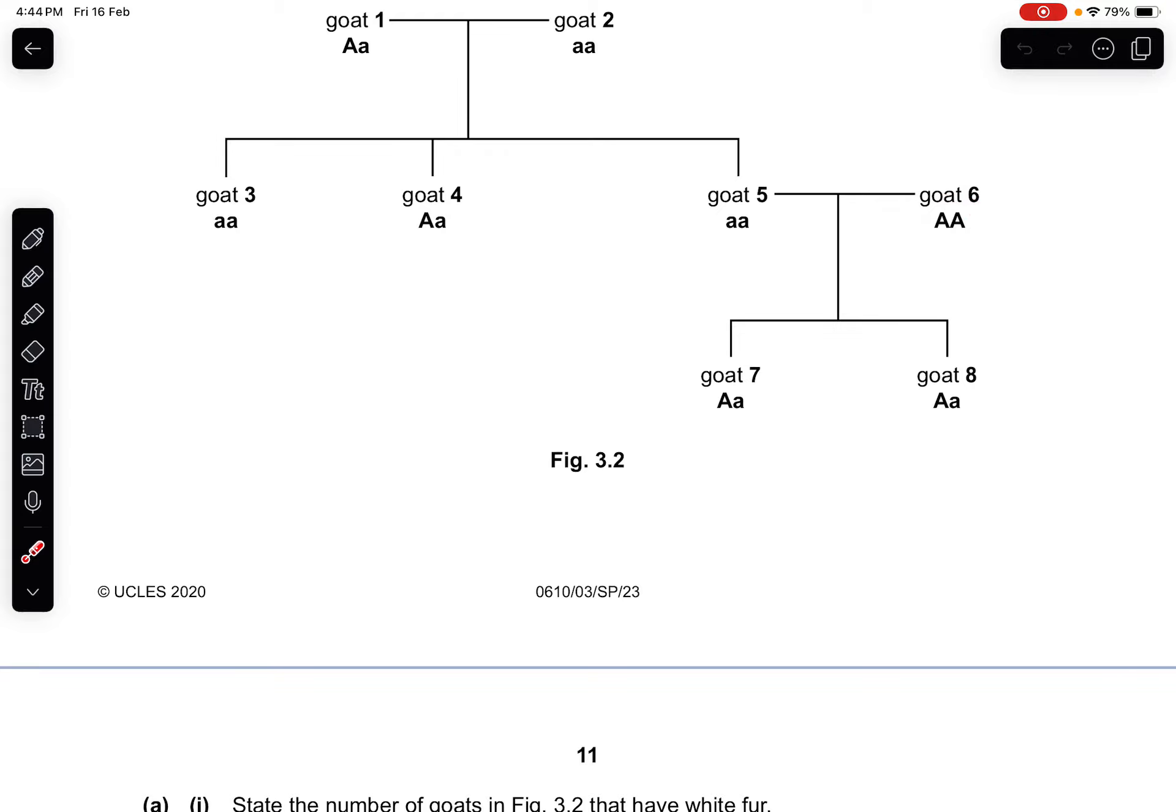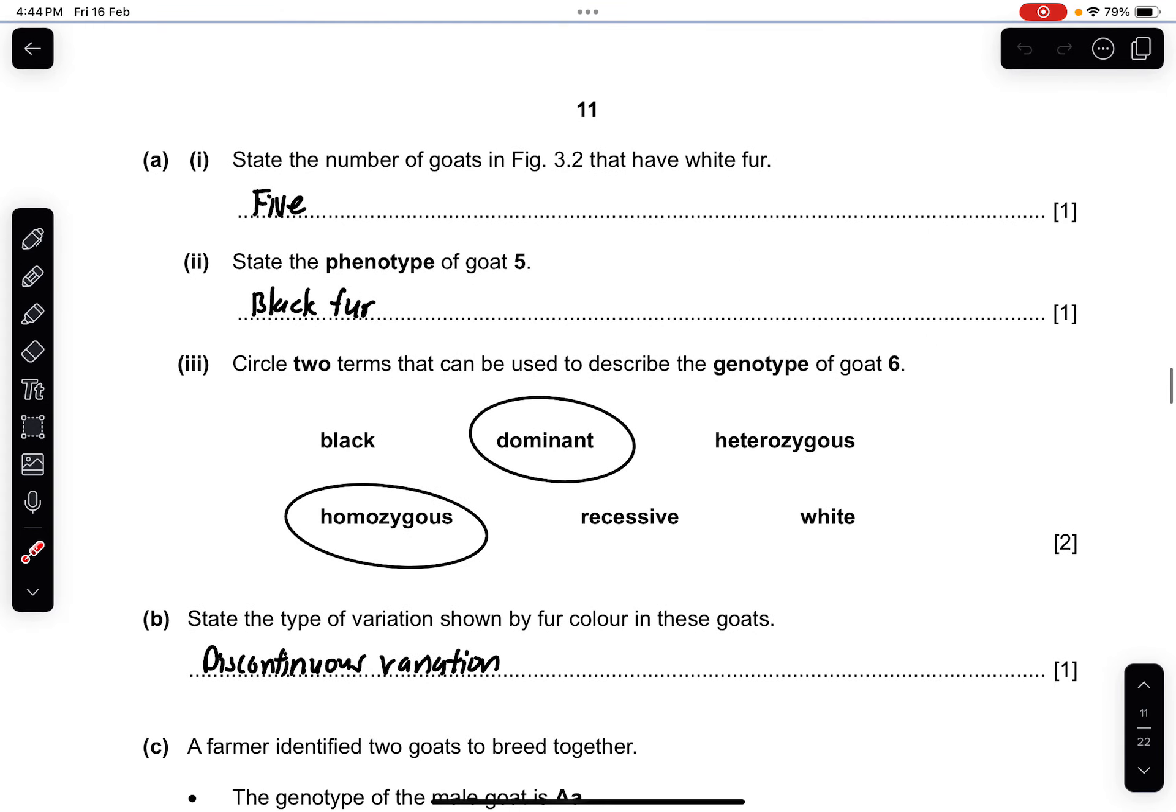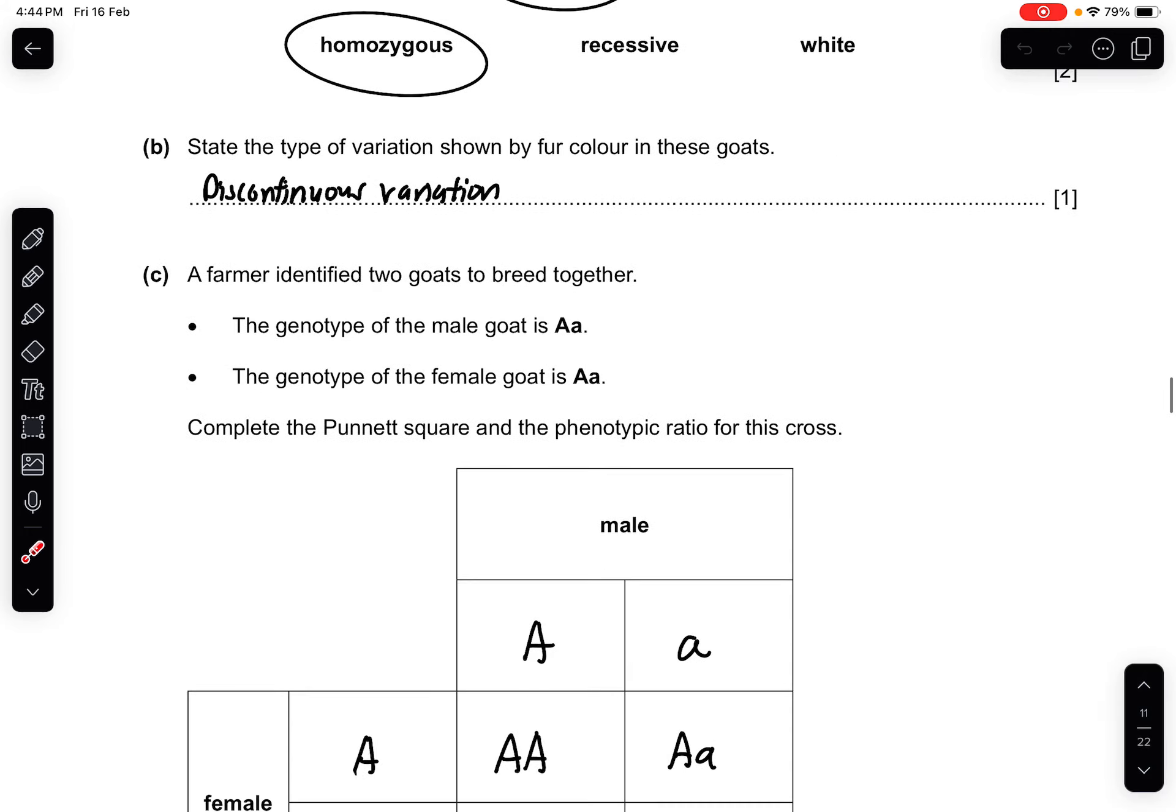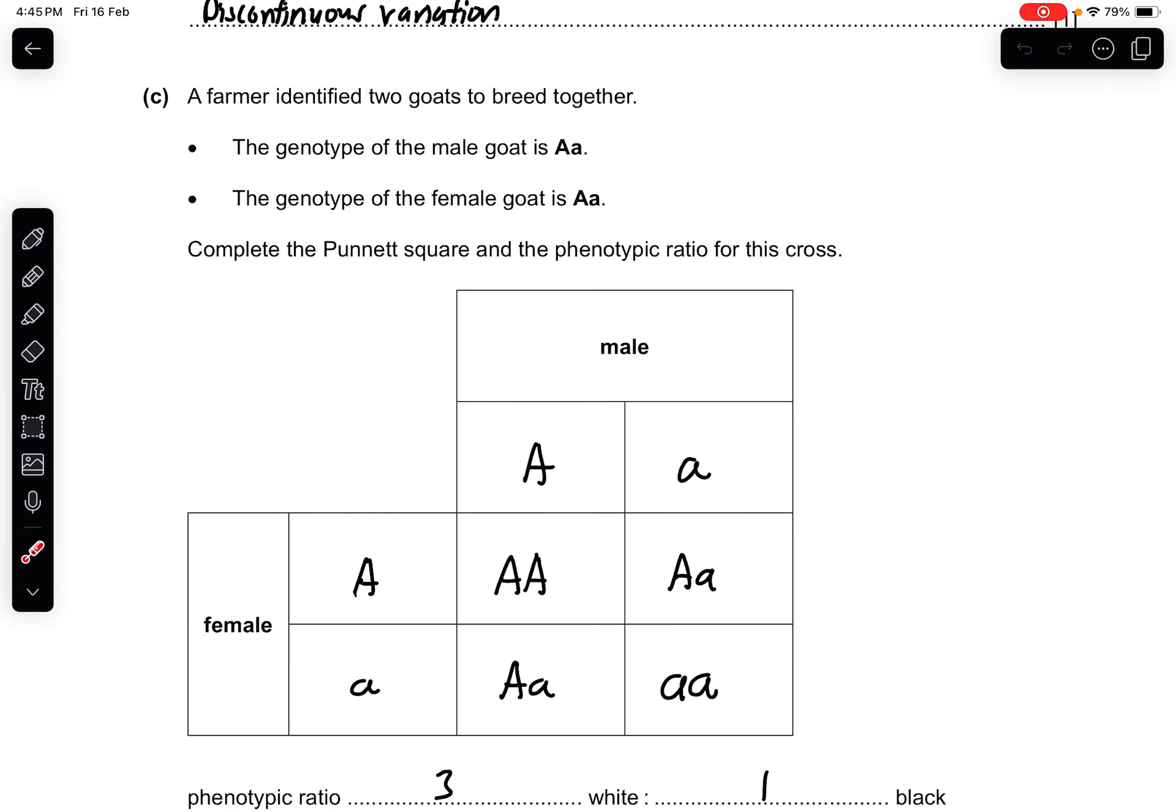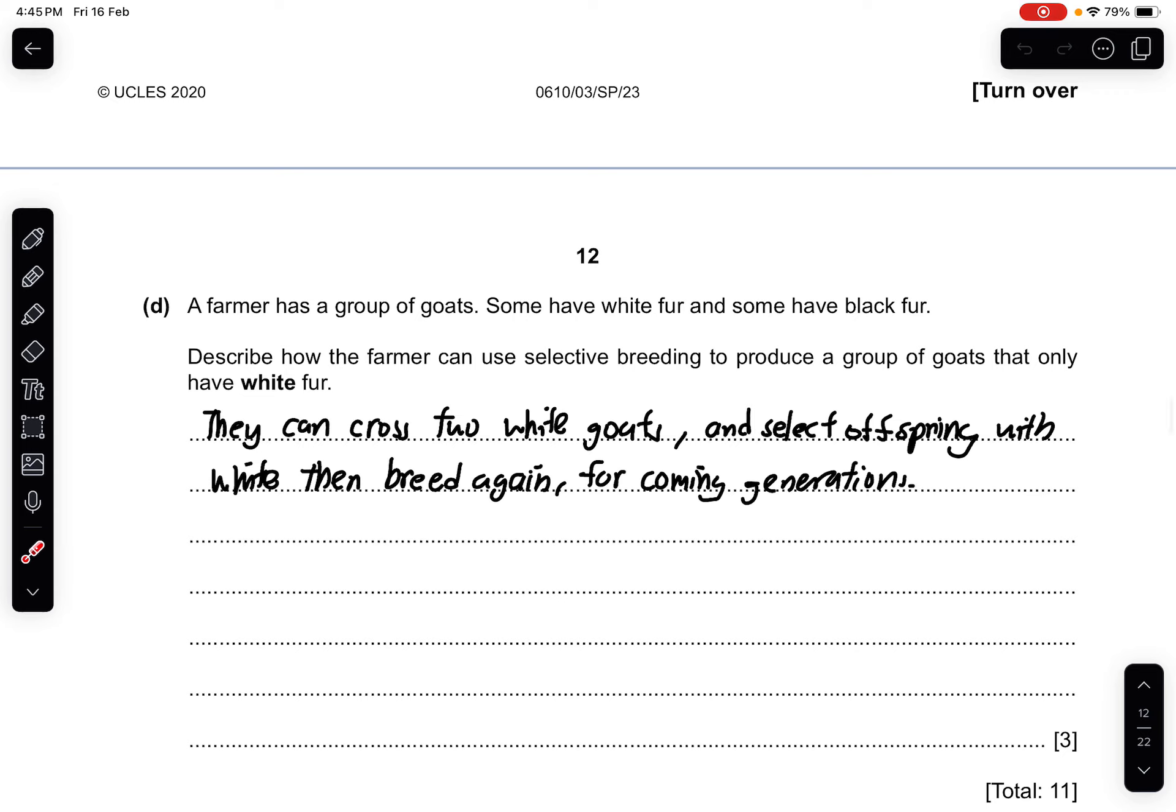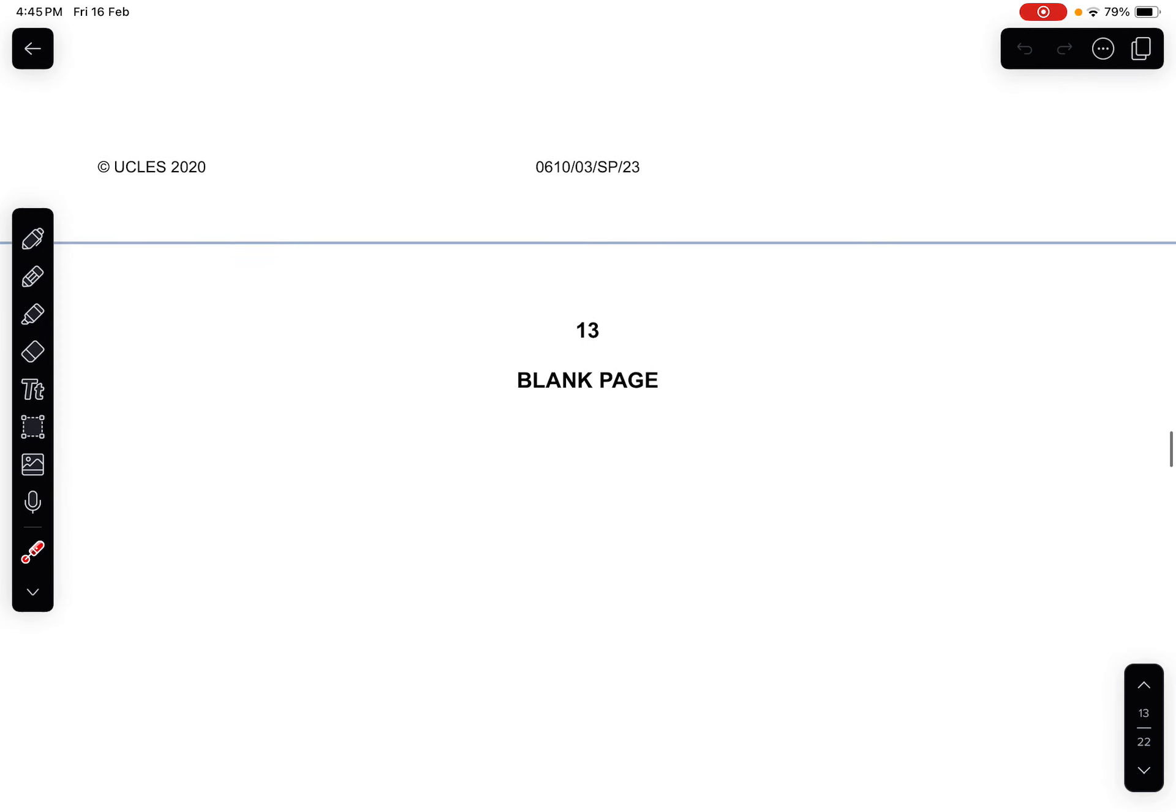Circle two terms that can be used to describe the genotype of goat 6: homozygous dominant. Part B: State the type of variation shown by fur color in these goats. Fur color is passed down through genetics and by inheritance, so it should be discontinuous variation. Part C: A farmer identified two goats to breed together. The genotype of the male goat is Aa, the genotype of the female goat is also Aa. You do the cross and you should get a 3:1 ratio. Part D: Describe how the farmer can use selective breeding to produce goats that only have white fur. Cross or breed two white goats, then select the offspring with the white color fur allele and breed them again for many generations.